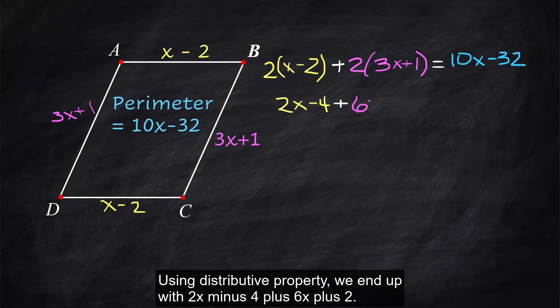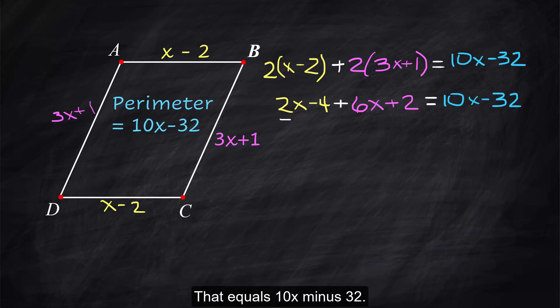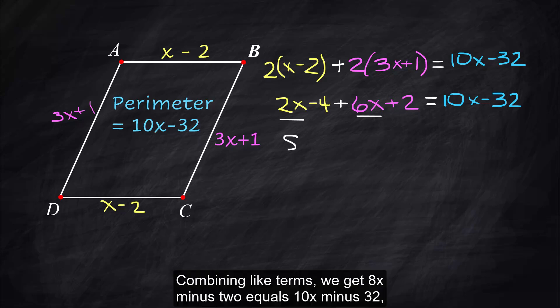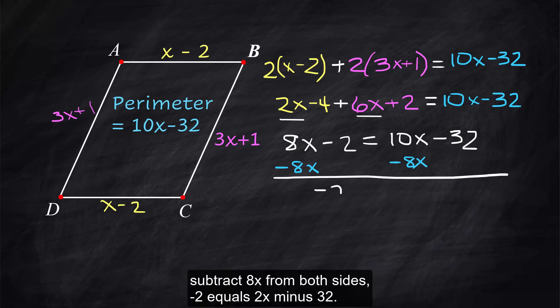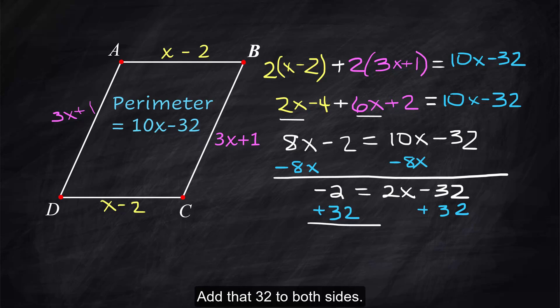Using distributive property we end up with 2x minus 4 plus 6x plus 2 that equals 10x minus 32. Combining like terms we get 8x minus 2 equals 10x minus 32. Subtract 8x from both sides negative 2 equals 2x minus 32. Add that 32 to both sides 30 equals 2x x equals 15.